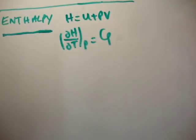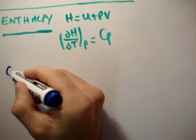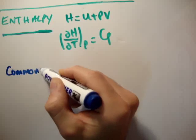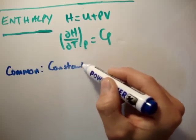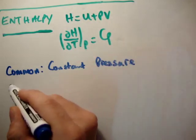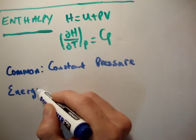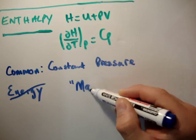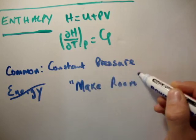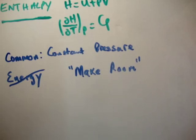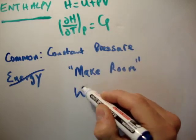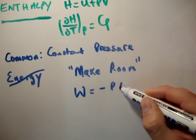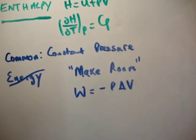Constant pressure processes are common, in particular in chemistry. In a constant pressure process, we prefer not to look at energy changes because they're difficult to calculate. Instead, what we look at is making room for a system. Making room means expanding against the surroundings. The work done is equal to minus P delta V. If we're making room for something, then delta V is positive, therefore we get negative work — your system is doing work against the surroundings.